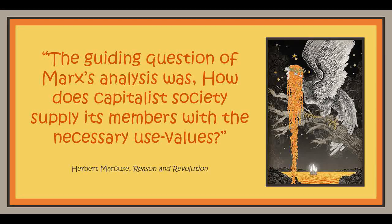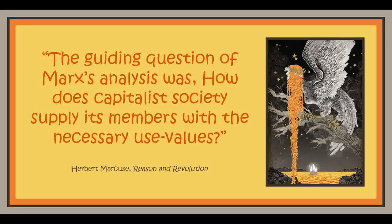The exchange value of a palace can be expressed in a certain number of boxes of shoe blacking. Vice versa, London manufacturers of shoe blacking have expressed the exchange value of their many boxes of blacking in palaces. Thus, entirely apart from their natural forms, and without regard to the specific kind of wants for which they serve as use values, commodities in certain quantities equal each other, take each other's place in exchange, pass as equivalents, and, in spite of their variegated appearances, are all of a piece. The reason for this homogeneity must be sought in the nature of labor.